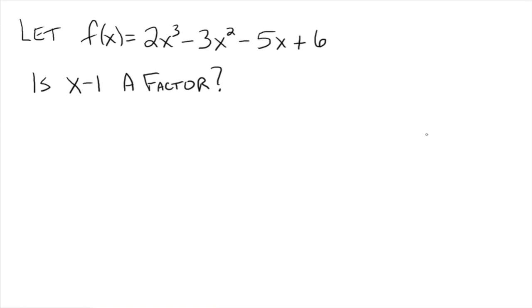One way to do it would be to find f(1) because your k value here is 1. What's f(1)? You plug 1 in for all the x's and you get 2 - 3 - 5 + 6 and that all goes to 0. Everybody get that?